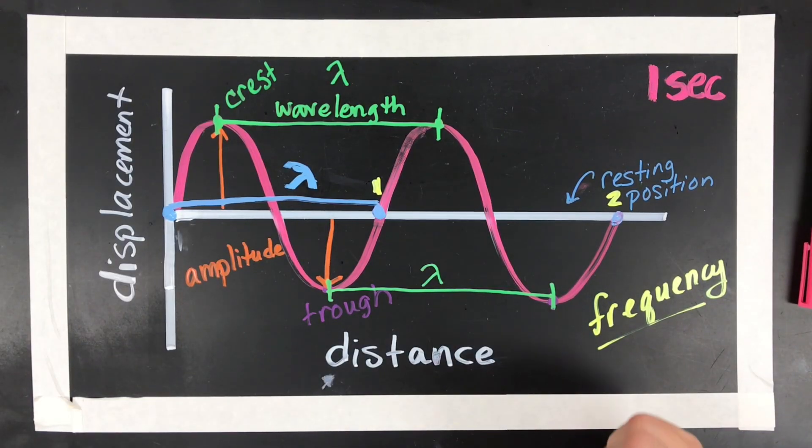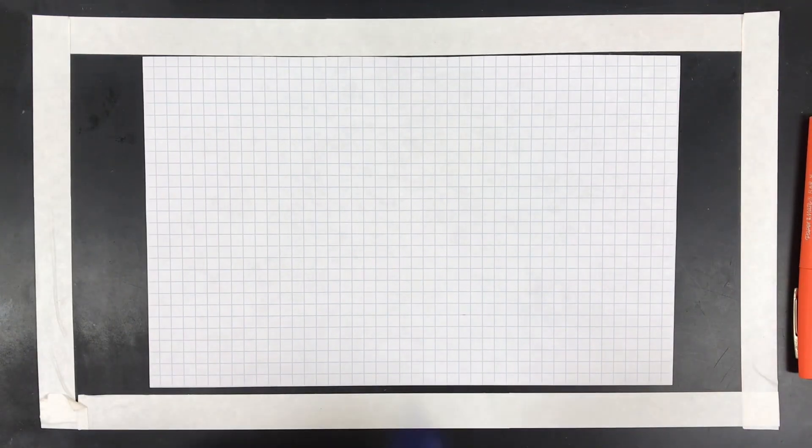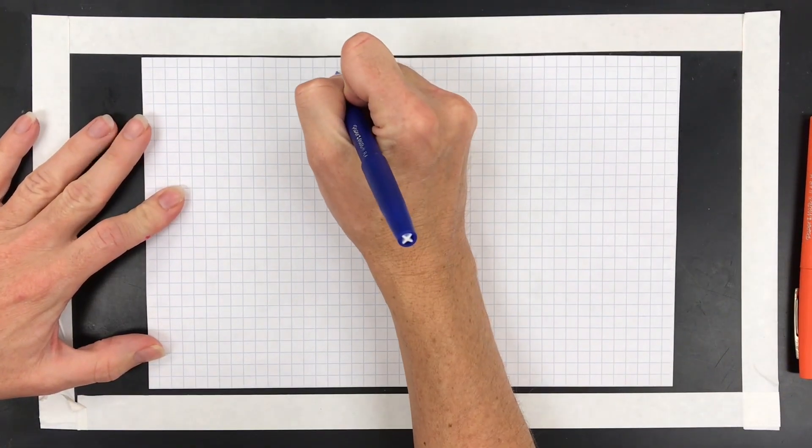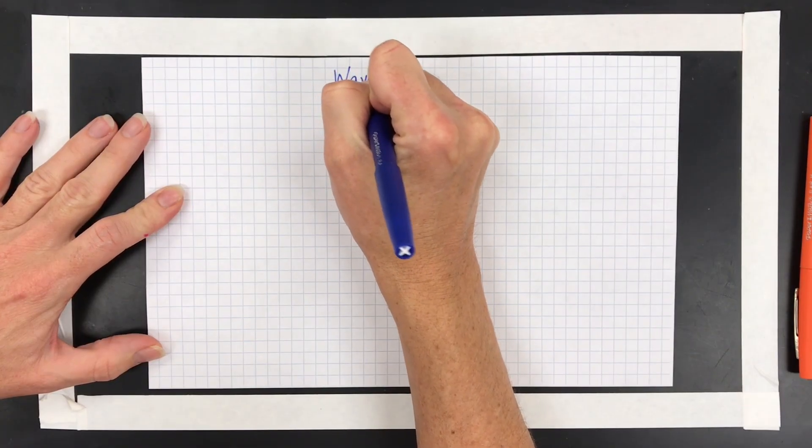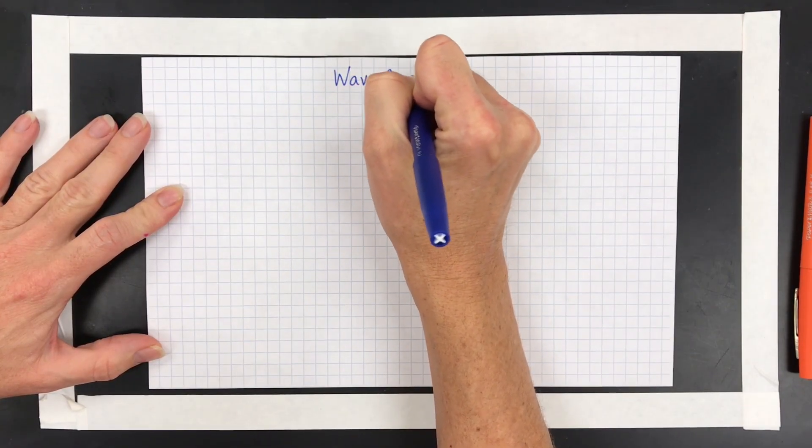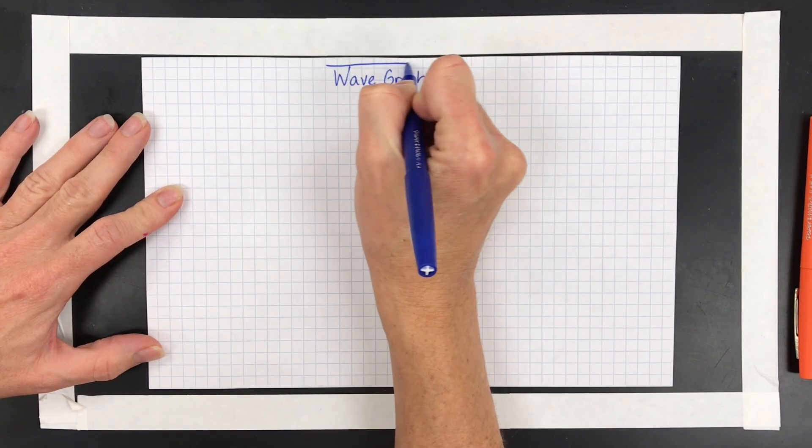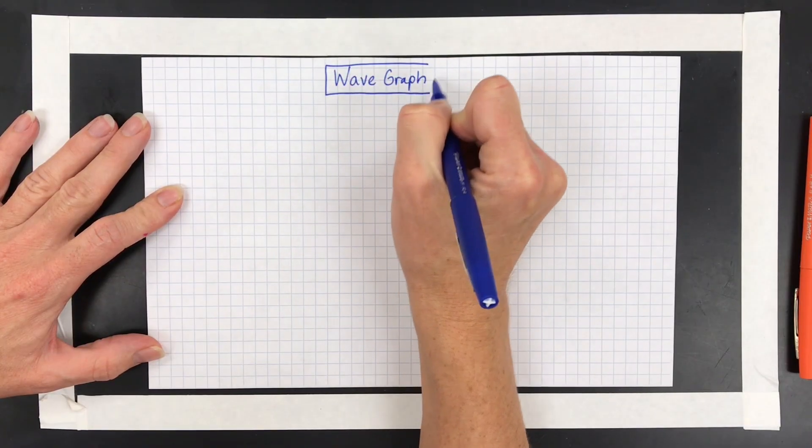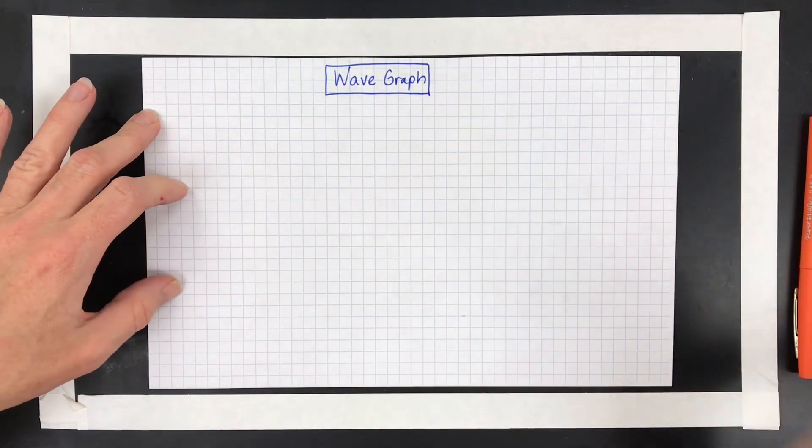All right, we're going to move on to the next part of the video, which is how to graph these waves. So the first thing you're going to want to do is have your graph paper and put a title on it. I'm just going to title mine Wave Graph. You'd probably put a better title on it if you were doing physics or chemistry or mathematics, but we'll just call it Wave Graph.